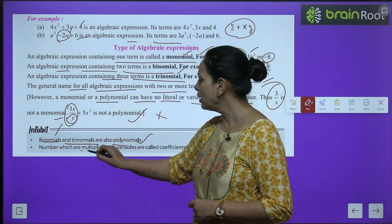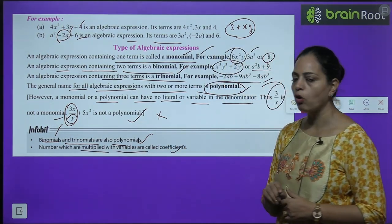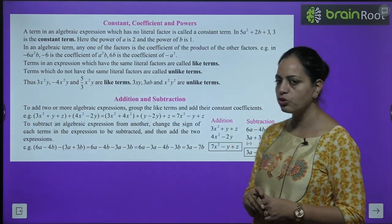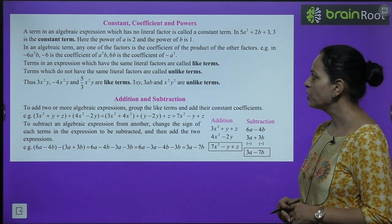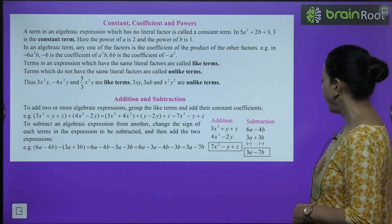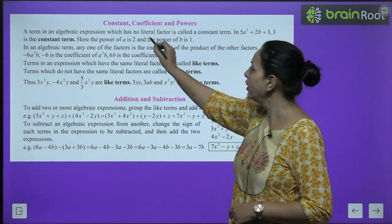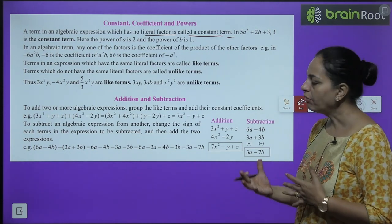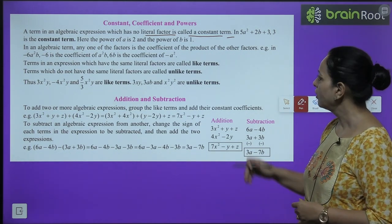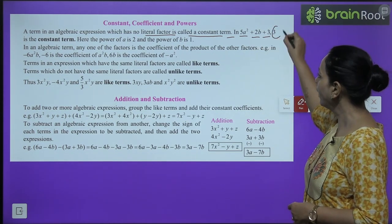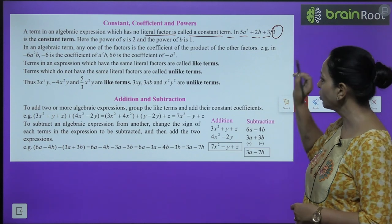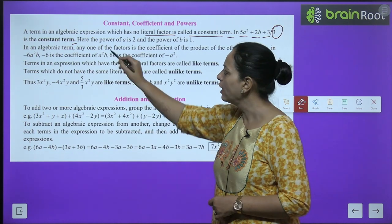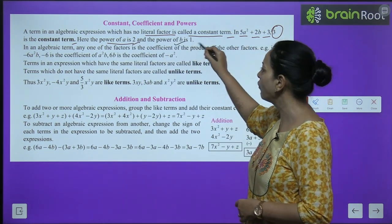Binomials and trinomials are also polynomials. Numbers multiplied with variables are called coefficients. A term in an algebraic expression which has no literal factor is called a constant. For example, in 5a² + 2b + 3, the number 3 is the constant term. Here the power of a is 2 and the power of b is 1.